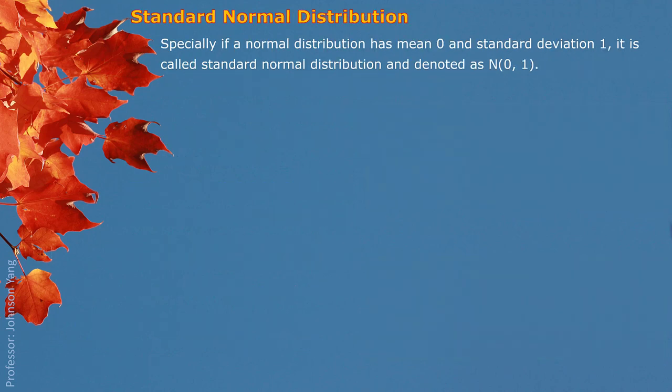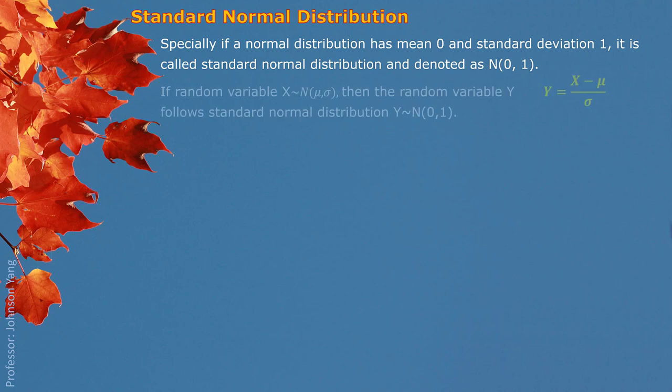Especially, if a normal distribution has mean zero and standard deviation one, it is called a standard normal distribution, and it is denoted as N(0,1).